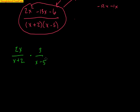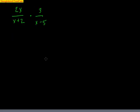You literally go straight across the top and straight across the bottom. So 2x times 3 is 6x. Straight across the bottom, but you've got to treat these as binomials — it's binomial times binomial.